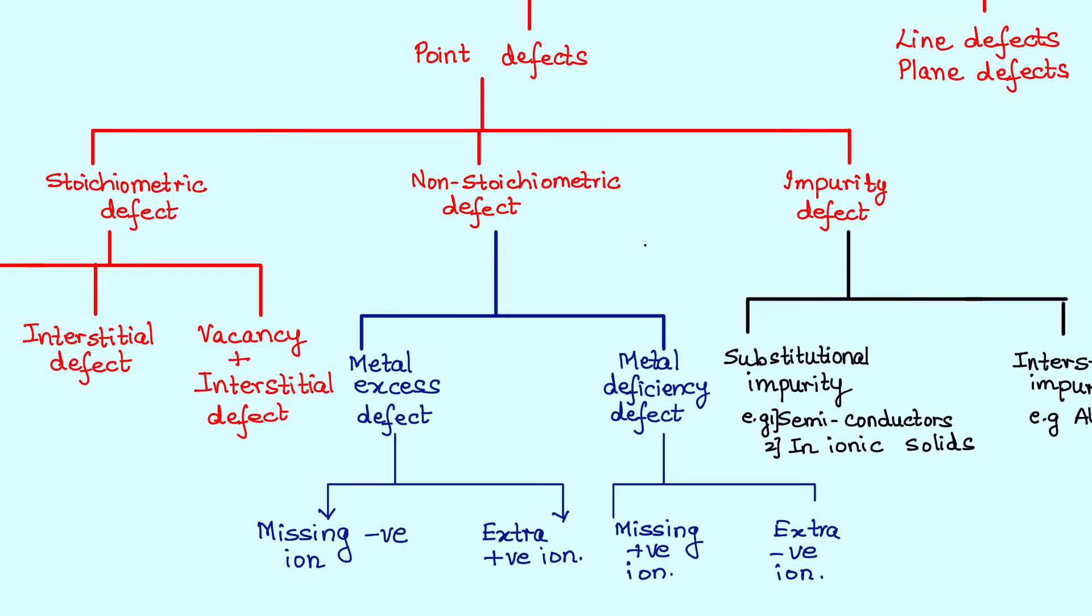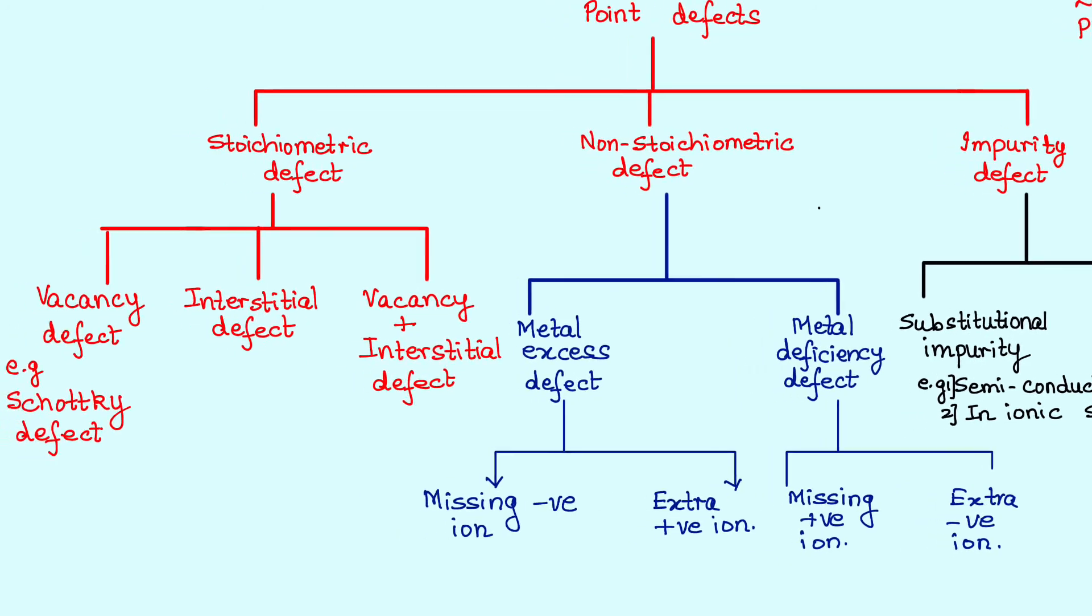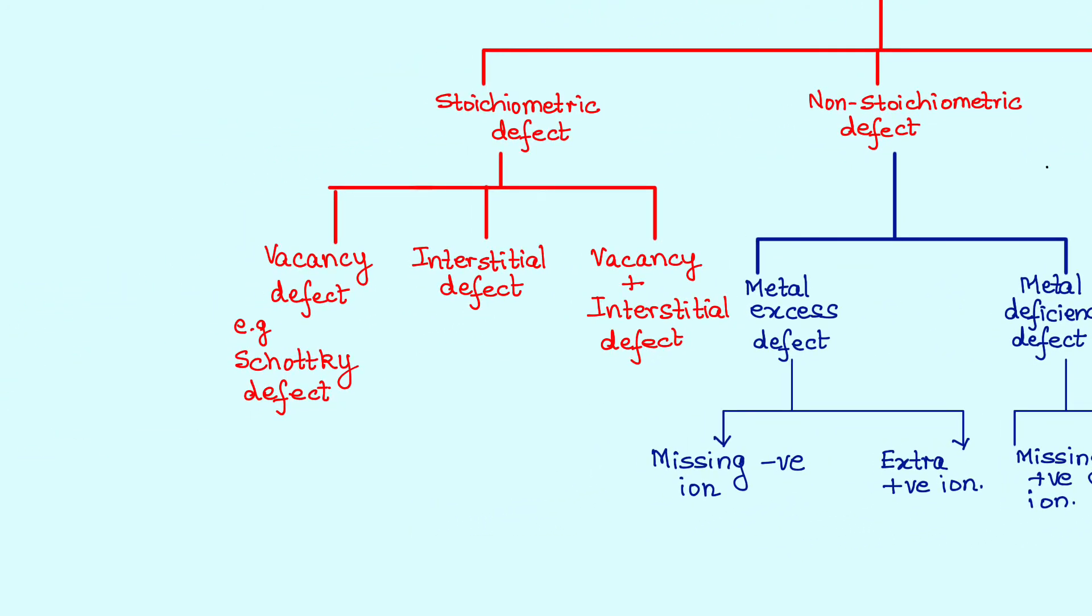The point defects are further classified into stoichiometric, non-stoichiometric and impurity defects. And don't worry we will break them down. We will study them one at a time to make things very clear and relatable. Stoichiometric defects are further classified into vacancy defect, interstitial defect and there are crystals having both vacancy and interstitial defect. So that's a third column. So for example, Schottky defect is a vacancy defect. But if we talk about Frenkel defect, it's a vacancy plus interstitial defect.